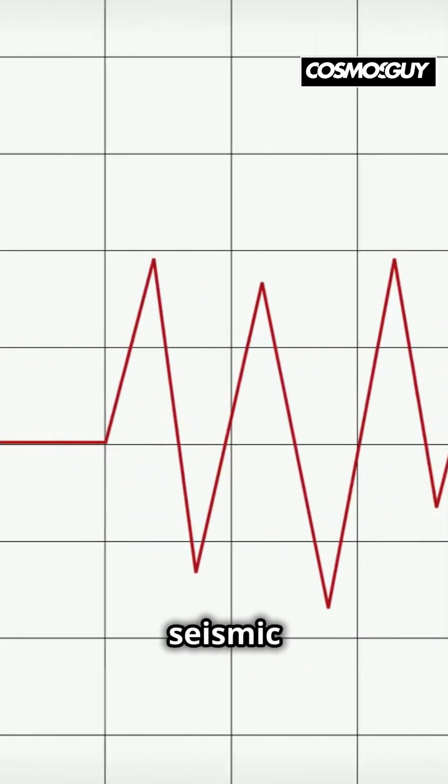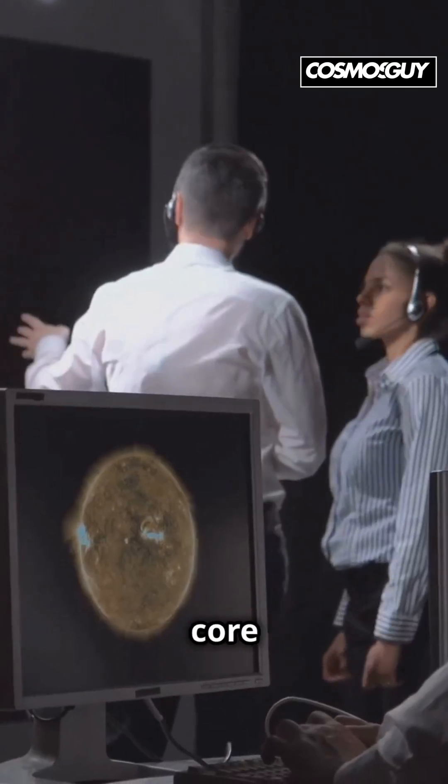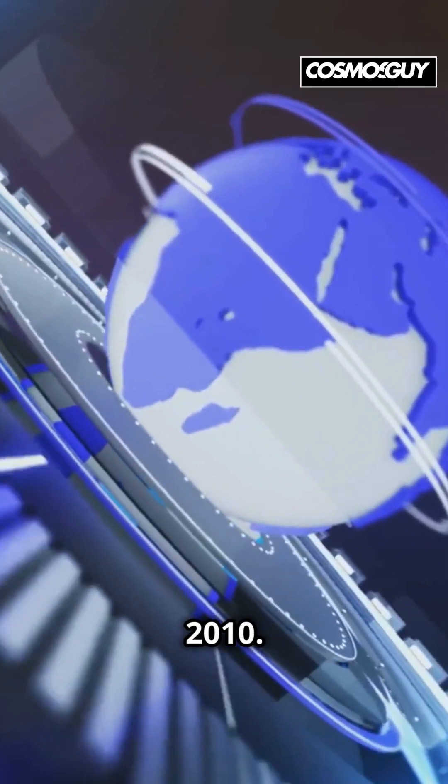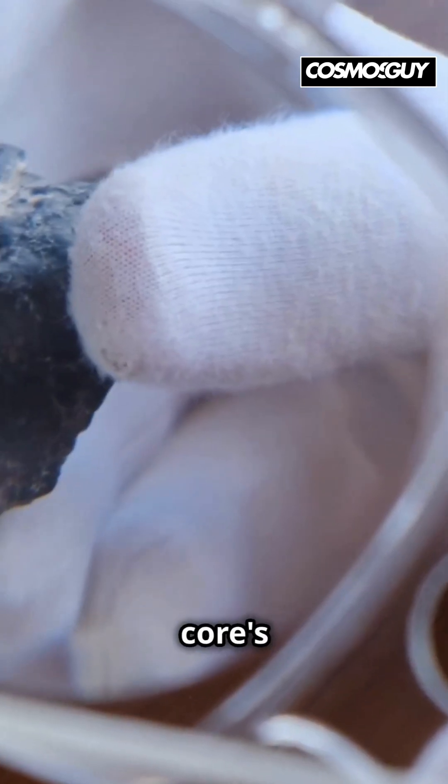By studying seismic waves from earthquakes over the last 30 years, researchers found that the inner core may have slowed down around 2010. These changes could affect our magnetic field and even help us understand the core's properties better.